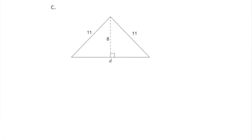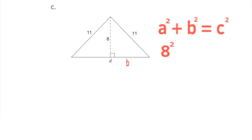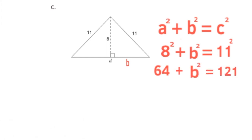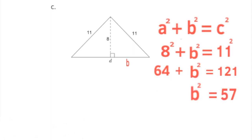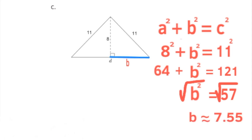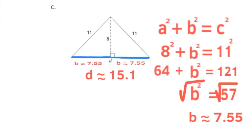Part c: triangle c is made up of two right triangles. If we find the missing side length of one right triangle, we can double it to find side length d. Using the Pythagorean theorem: 8 squared plus b squared equals 11 squared. That gives 64 plus b squared equals 121. Subtracting 64 from both sides: b squared equals 57, so b is approximately 7.55. Doubling that gives d as approximately 15.1 units.